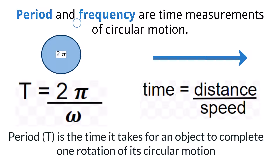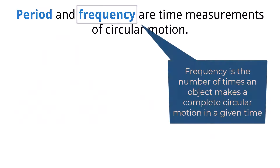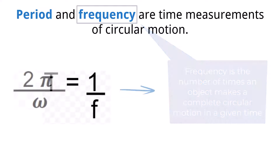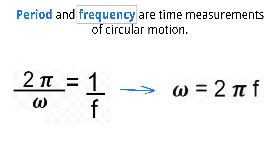Another quantity to be familiar with in circular motion is frequency. Frequency is the measurement of the number of times an object goes around a circle in a unit time — most commonly the number of rotations per second. This is known as Hertz, named after physicist Heinrich Hertz. There is a link between frequency and period which says the period is equal to 1 over the frequency. And if you replace period in terms of angular speed, we can define the angular speed as 2 times pi times the frequency.